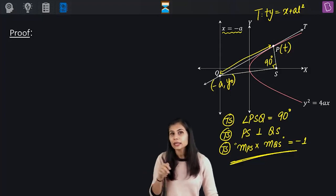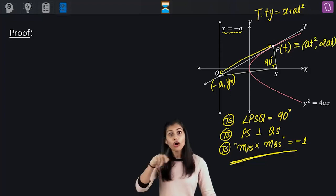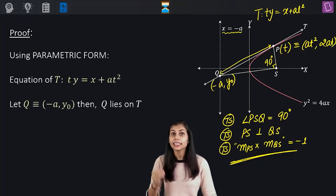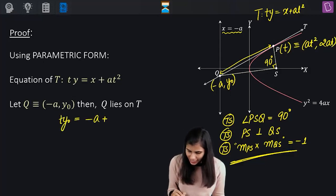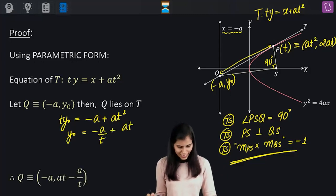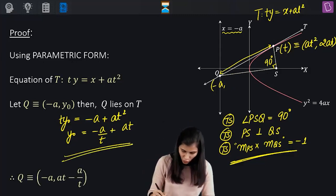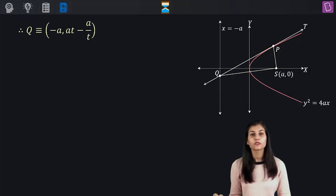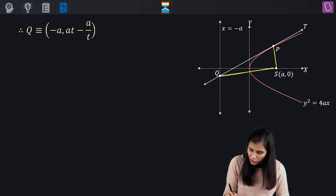P has parameter T, so its coordinates are AT squared comma 2AT. Q lies on the tangent, so substituting X equals minus A: TY-naught equals minus A plus AT squared, giving Y-naught equals AT minus A by T. Hence the explicit coordinates of Q are minus A comma AT minus A by T. With coordinates of P and Q in hand, we can find the slopes of PS and QS.